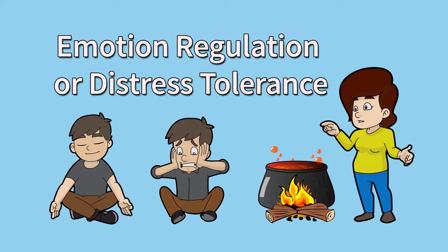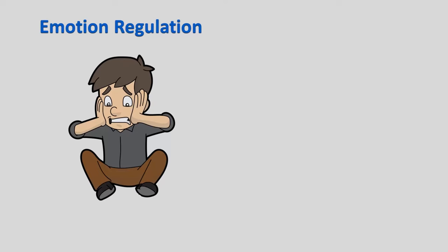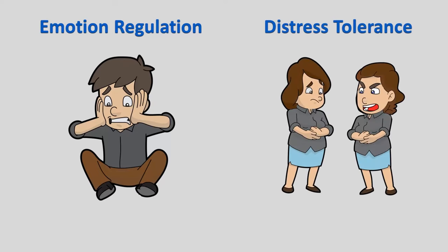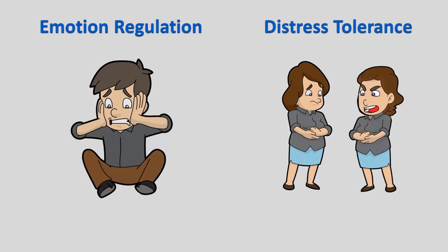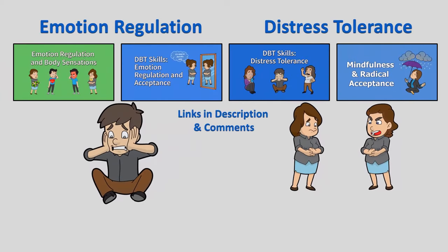I want to make a quick video about a couple of related concepts in dialectical behavior therapy: emotion regulation and distress tolerance. If you're not familiar with these and would like to learn more about them, I have a number of videos about emotion regulation and distress tolerance that I link to in the pinned comment and description, so please check those out.